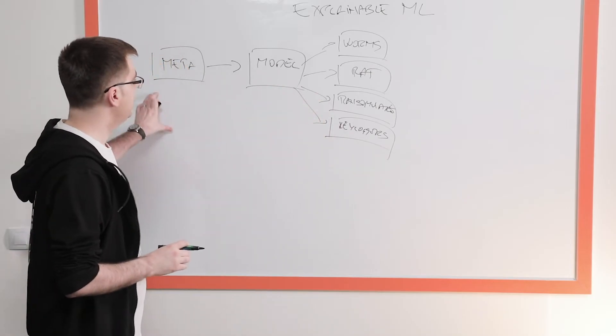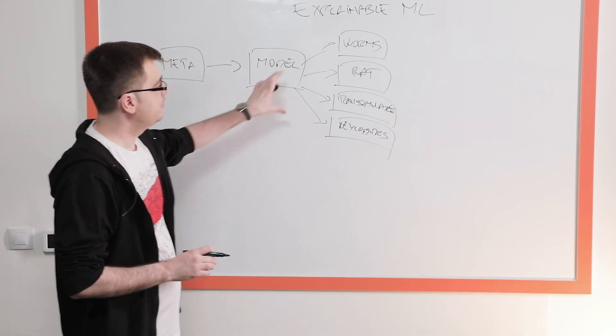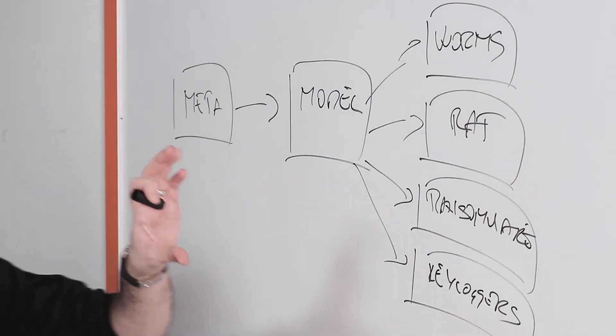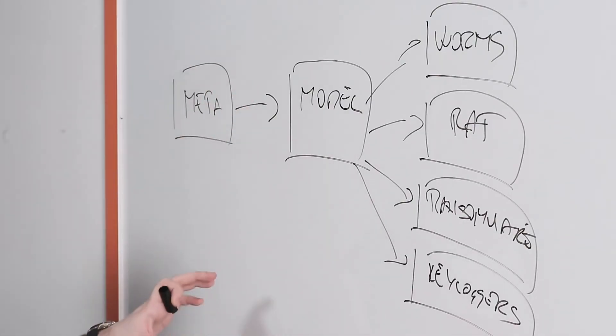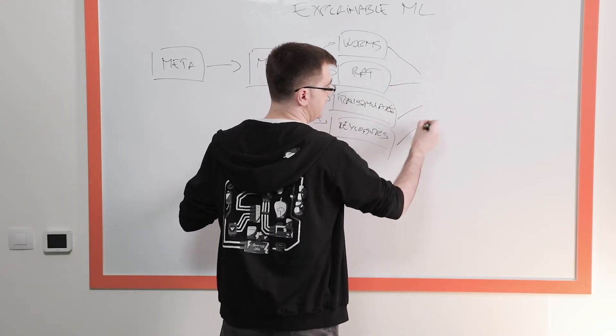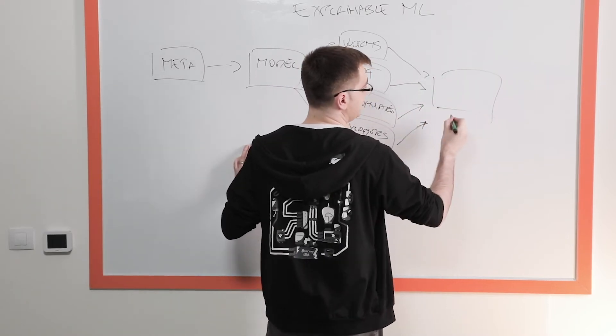So we start with the metadata, we transform it, we run it through our machine learning models which produce these outcomes. The reason why we call this explainable machine learning is that at the end, once we detect that something is malicious and of this specific threat type, we also explain it.